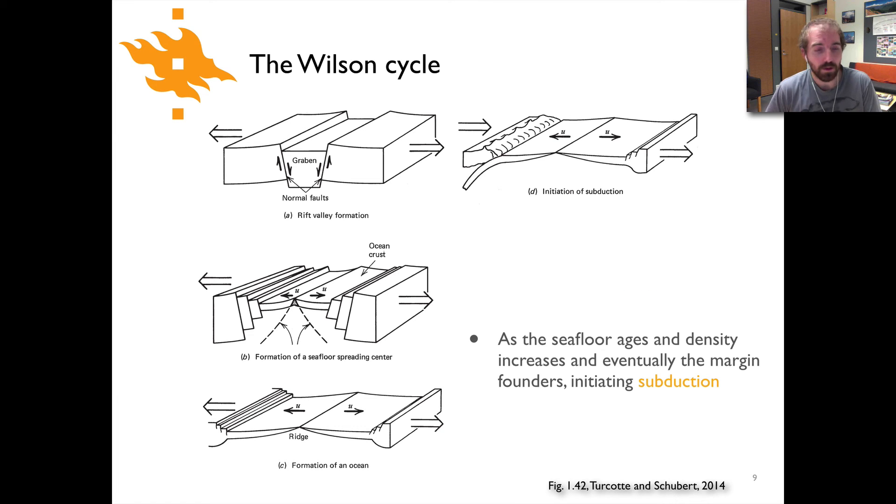After a certain amount of time, when the oceanic lithosphere has become significantly thick and cool and dense, it may begin to founder along the continental margin and want to sink. Because the density of the oceanic lithosphere exceeds that of the asthenosphere, we'll have the initiation of a subduction zone. You can see that here along the left side where our subduction zone has formed on what was once a passive margin.